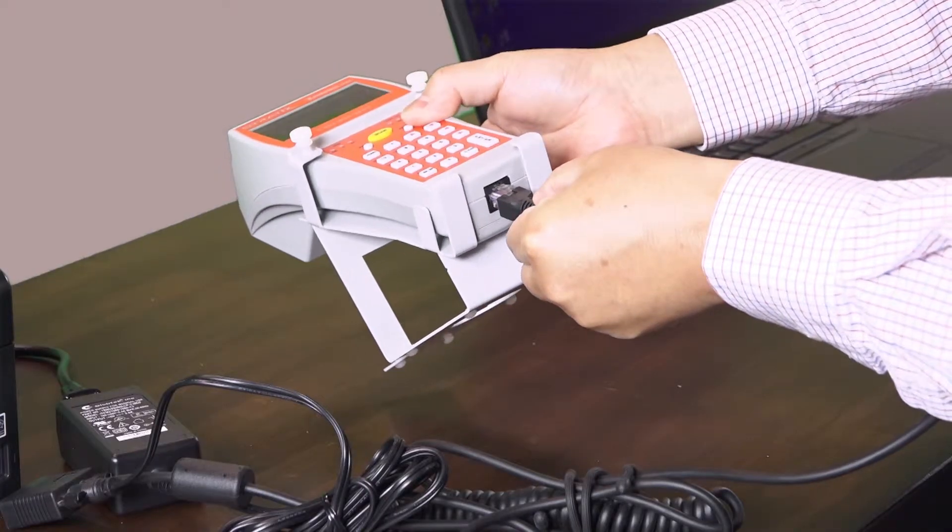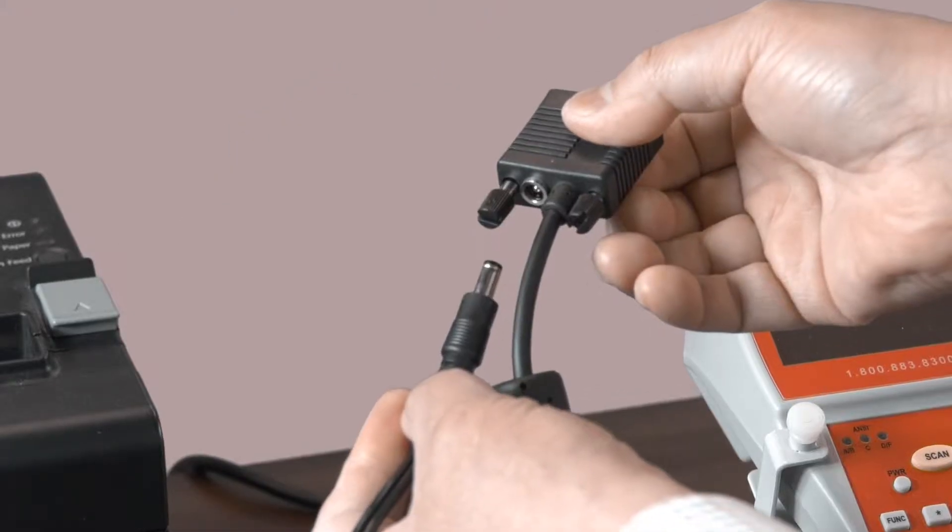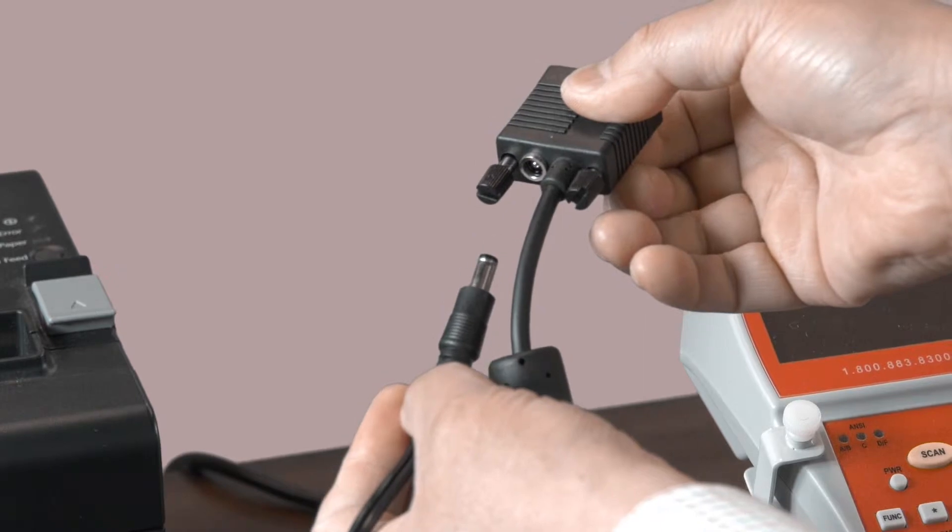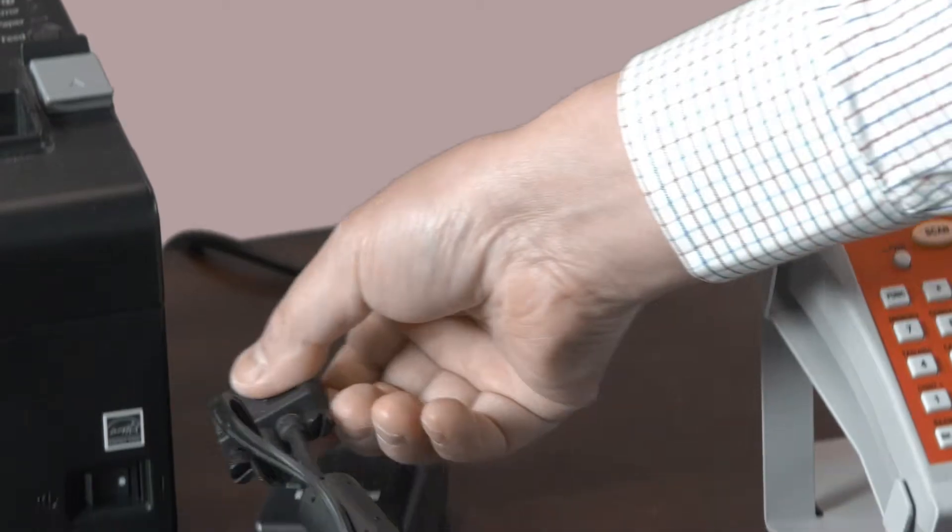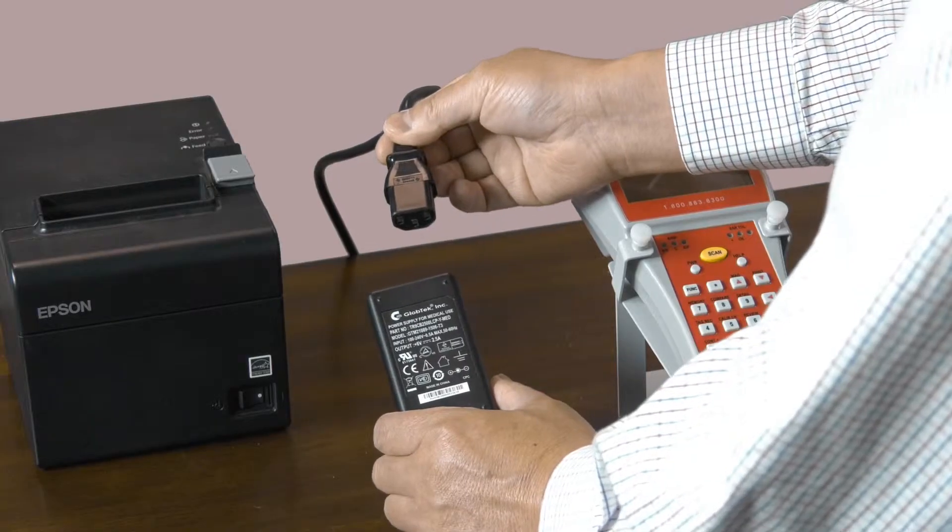Plug the RJ45 connector into the base of the verifier. Once that has been plugged in, take the AC adapter and plug it into the back side of the nine-pin connector on the communications cable.